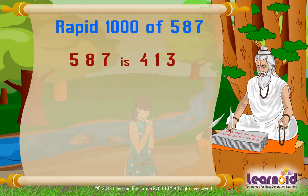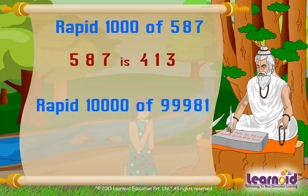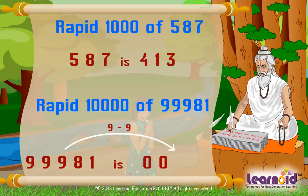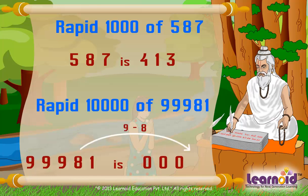Let's find rapid 10,000 of 99981: 9 minus 9 is 0, 9 minus 9 is 0, 9 minus 9 is 0, 9 minus 8 is 1, and 10 minus 1 is 9. So the rapid 10,000 of 99981 is 00019.